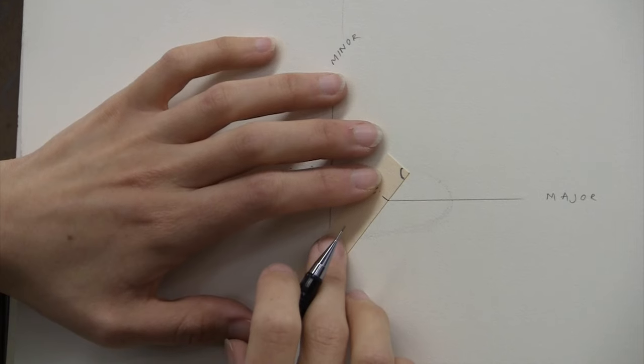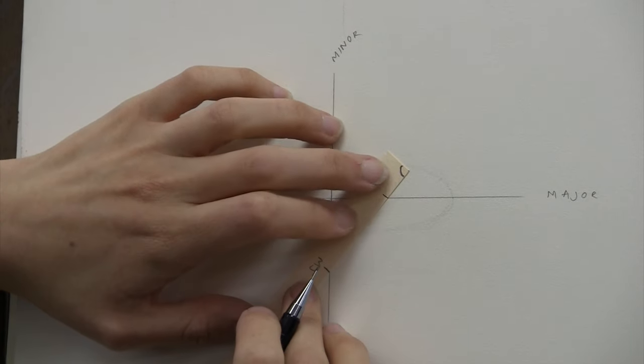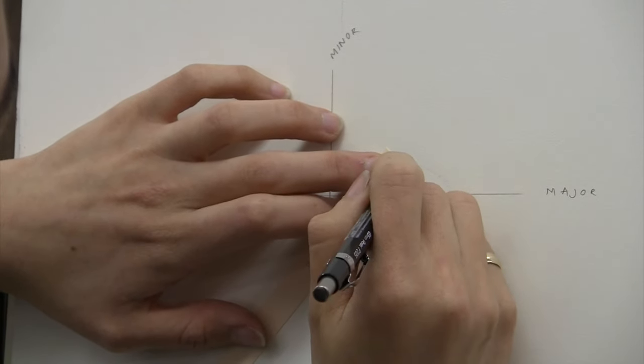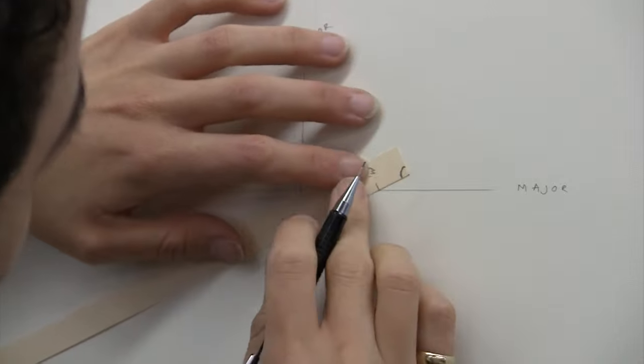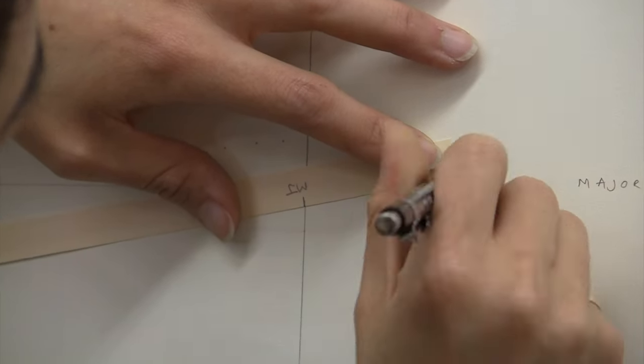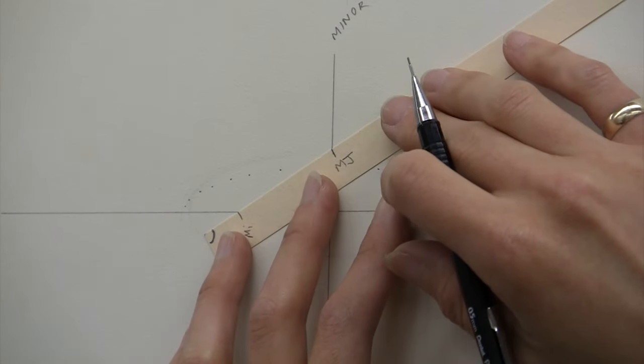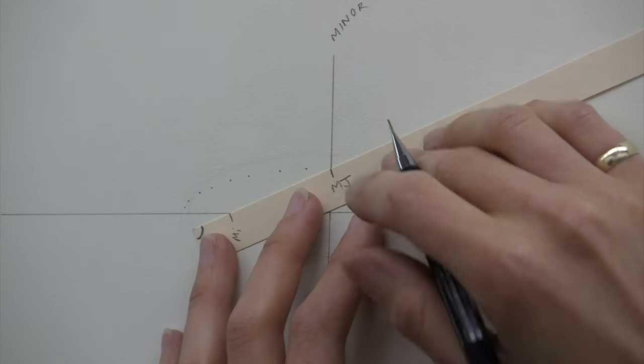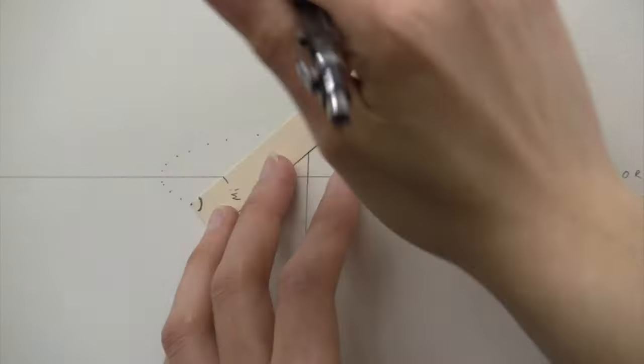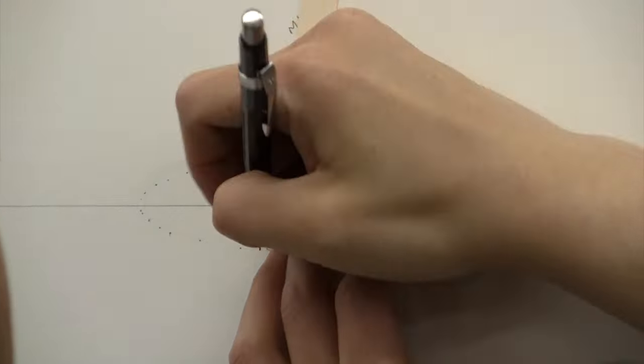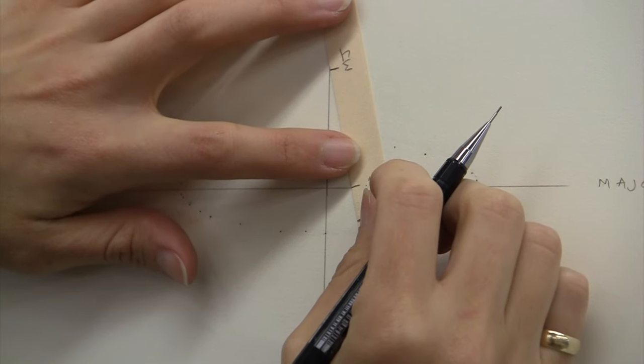So always minor on the major, major on the minor. Even if we switch quadrants, the same rules apply. Minor on the major, major on the minor. Moving on to the last quadrant.